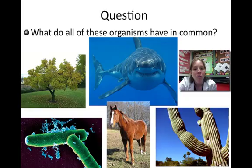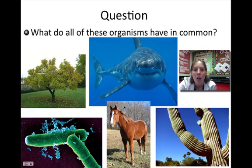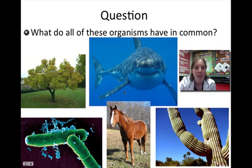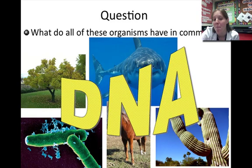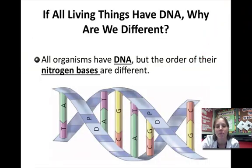Biotechnology is based on the idea that all organisms have something in common with one another. So if I look at all of these different living things — like a tree, a shark, a bacteria, a horse, and a cactus — all of these things have one thing in common: they all have DNA. And because of that, I'm going to be able to mess with this DNA and mix and match between these different organisms.